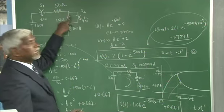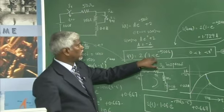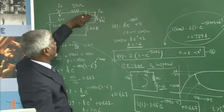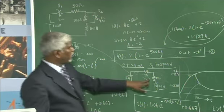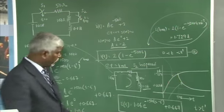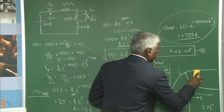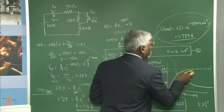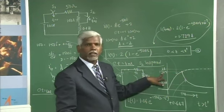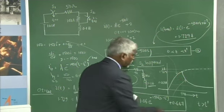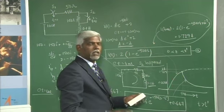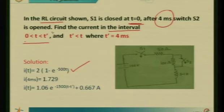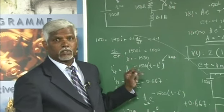To summarize: we have two switching actions — S1 closed gives one expression for current, and S2 opened at 4 ms gives another. Till 4 ms, S2 was closed and R2 was shorted (redundant). After S2 opens, 50 + 100 = 150 Ω is the total resistance and the current settles at 0.667 A. This is how the classical method handles transient analysis.